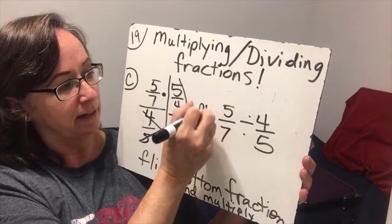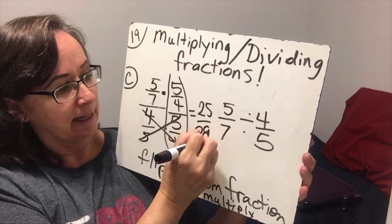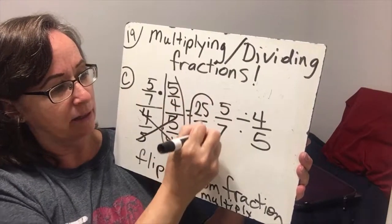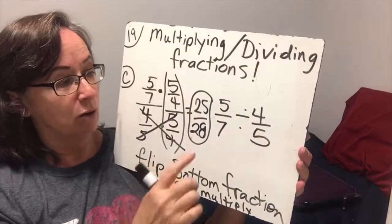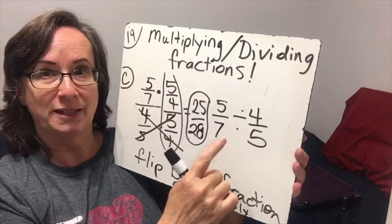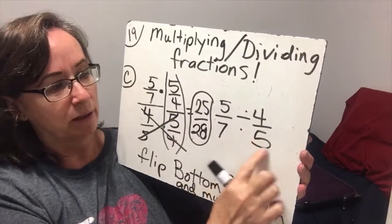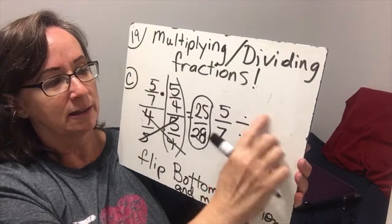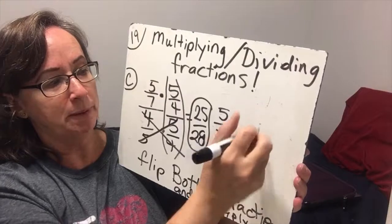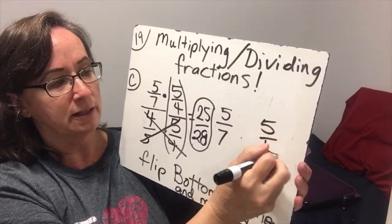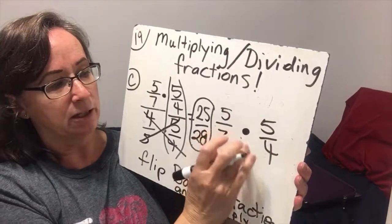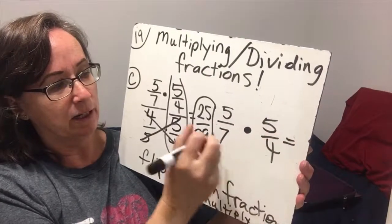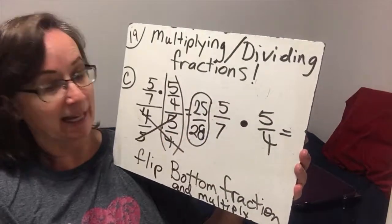And my answer is 25 over 28. So 25 divided by 28 is my answer. So also, we're going to do the same thing here. We're going to take our 4 fifths, flip it over to get 5 fourths, and change our sign to multiplication. And we get 25 over 28 again.